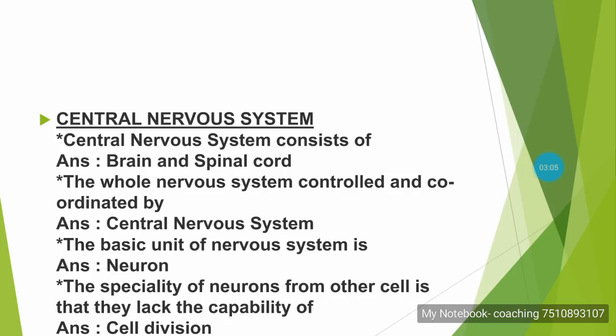The basic unit of the nervous system is the neuron. The speciality of neurons compared to other cells is that they lack the capability of cell division.